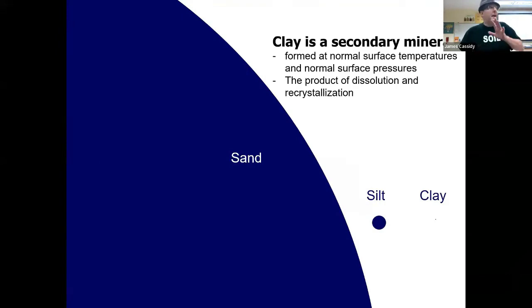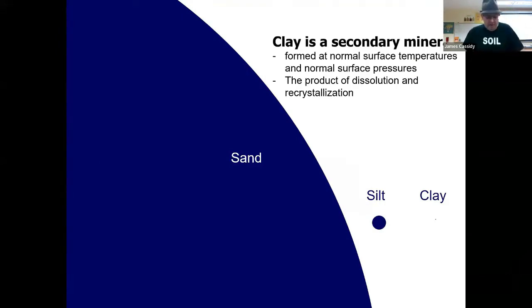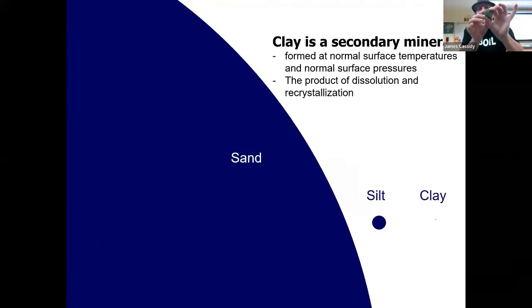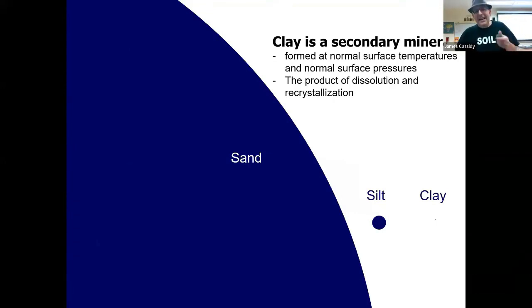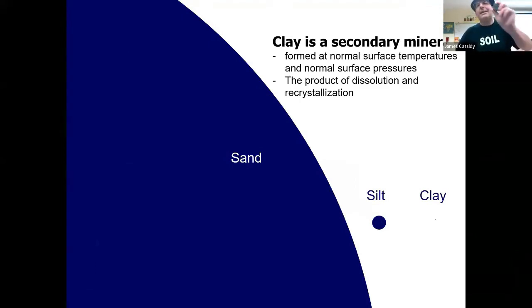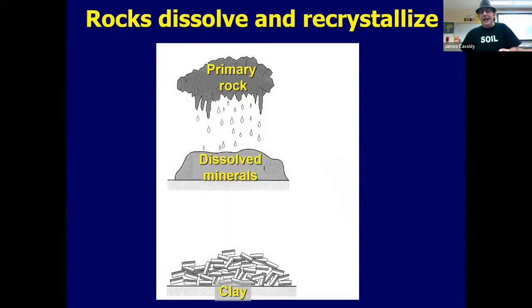Clay is a special thing called a secondary mineral that forms when primary minerals — meaning rocks like this — dissolve and recrystallize at the surface of the earth. Clay is a different thing; it's not just a rock. It's a secondary mineral that's formed when rocks dissolve in water and recrystallize.